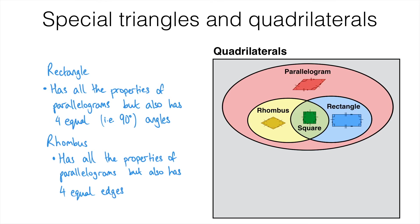The next shape we're going to look at is the square. This could be considered the most special of the quadrilaterals — it is the regular quadrilateral, meaning all four edges are the same length and all four angles are the same size. This makes it both a rhombus and a rectangle at the same time, as well as being a parallelogram. Opposite sides are parallel, opposite angles are the same, but like the rectangle all four angles are equal, and like the rhombus all four edges are the same length.